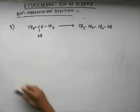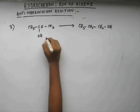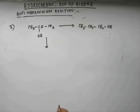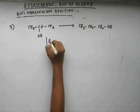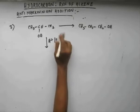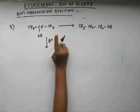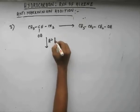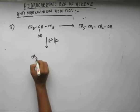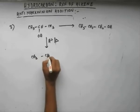So what we do is carry out a dehydration reaction, which we studied in the method of preparation of alkenes. If you carry out dehydration — the reagent being H⁺ and heat (Δ) — you will get propene.